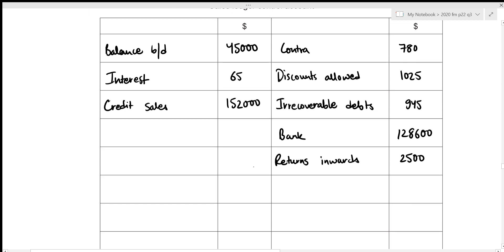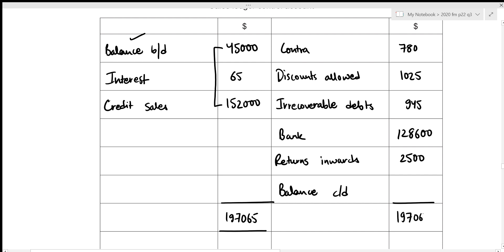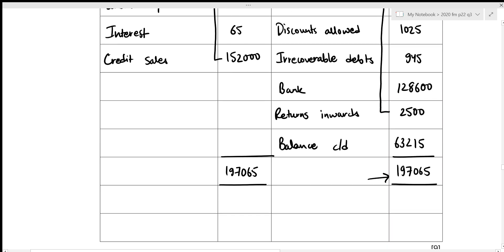This concludes all the items. We now figure out our closing balance. Since the opening balance is on the debit side, the closing balance will be on the credit side. The debit side total is 45,000 + 65 + 152,000 = 197,065, which is also the credit side total. The closing balance is: 197,065 − 780 − 1,025 − 945 − 128,600 − 2,500 = 63,215. We then record this as the opening balance for the new period: balance b/d of 63,215.